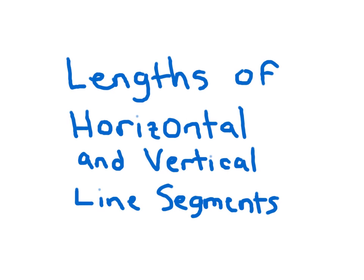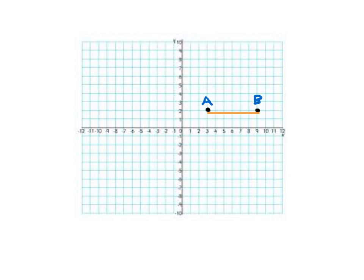Lengths of Horizontal and Vertical Line Segments. Here we're asked to find the length of line segment AB — that's how we write line segment AB — and we're going to say it is a certain amount of units long.